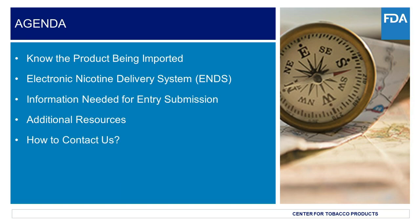In this webinar, we will cover some important updates and reminders about filing electronic nicotine delivery systems, or ENDS, entries in the Automated Commercial Environment, or ACE. We will discuss the following topics. Know the product being imported. In this section, we will take a look at the definition of a tobacco product and go over examples of tobacco products.